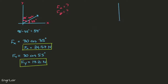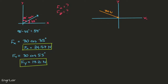We have the y and x axes again. This time the force is pointing towards the origin and it is in the second quadrant. The force is 50 newtons, and the angle it makes with the x-axis is 120 degrees. The arrow tells us where the components will point.